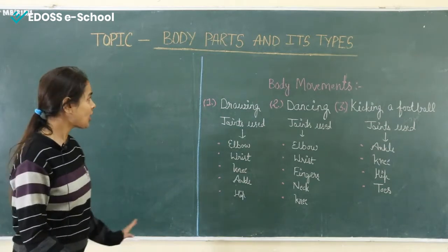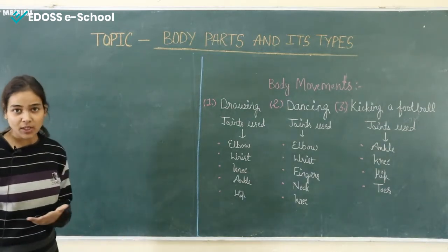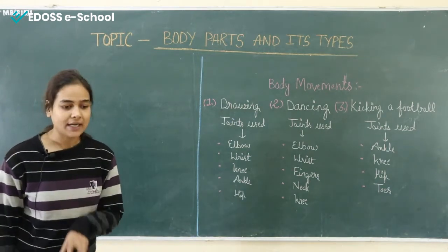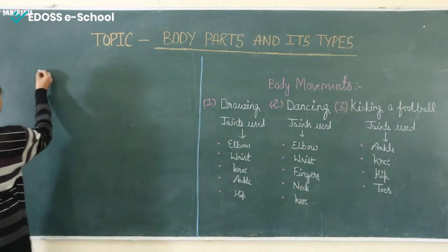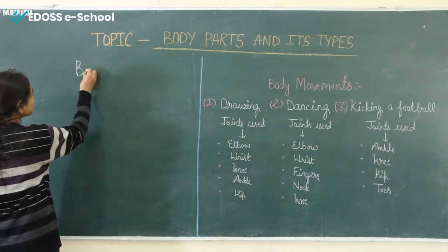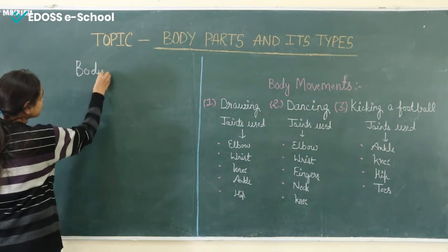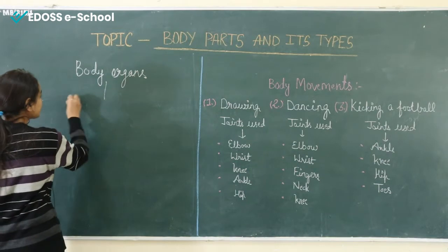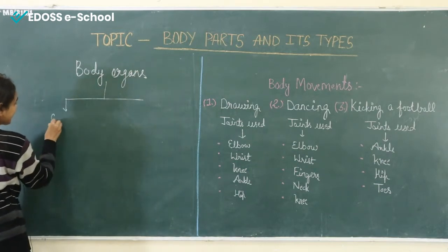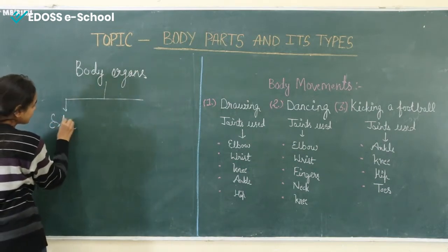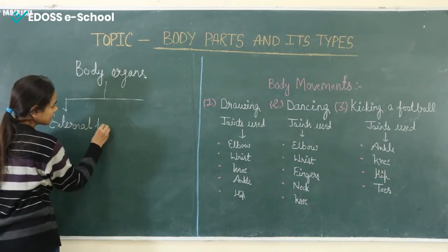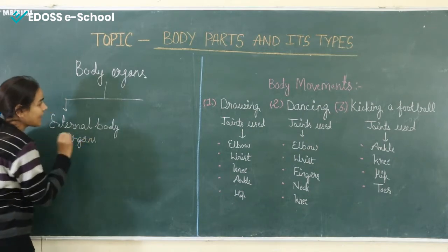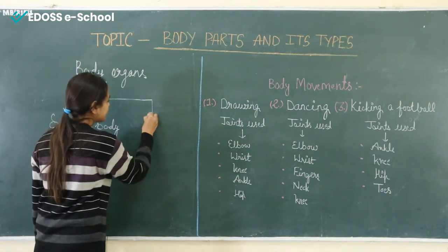Now today we will talk about the external body organs and the internal body organs. We can divide them into two parts. The first one is external body organs, and the second one is internal body organs.